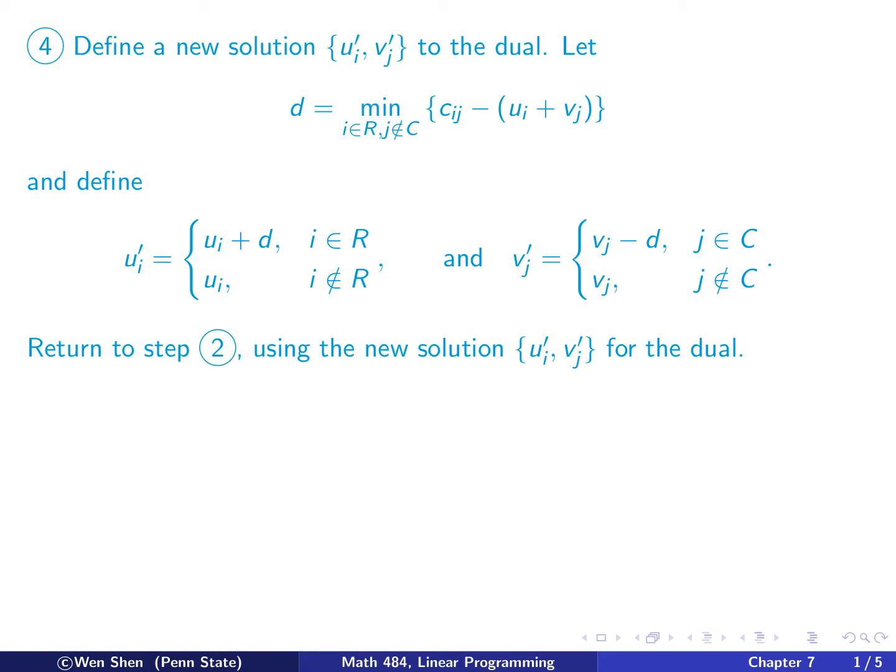Then I have a new set of solution, u_i v_j with a prime. And we'll take that as the new solution for the dual and I will return to step 2 and carry that out.